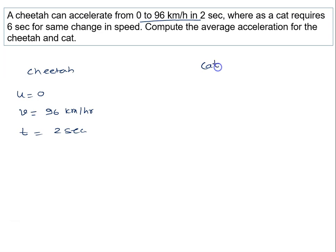Where is the cat? The cat requires 6 seconds for the same change in speed. U is still 0 and V is the same, that is 96 km per hour. And time taken in this situation is 6 seconds.